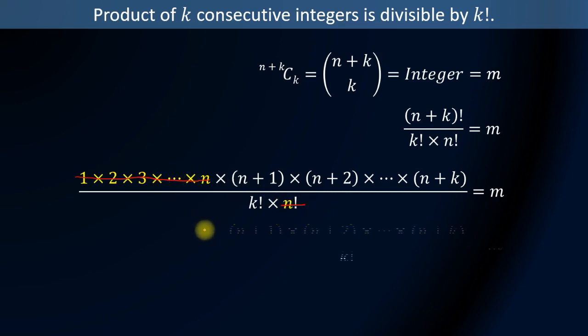And we will be left with n plus 1 times n plus 2 times all the way up to n plus k over k factorial, and again it is equal to m.